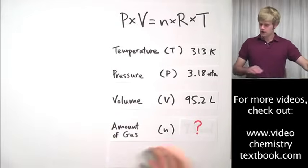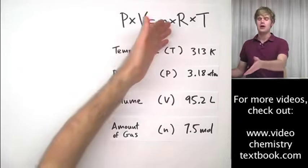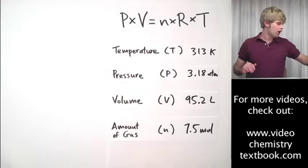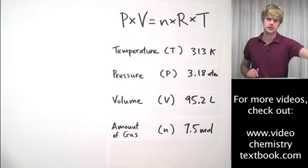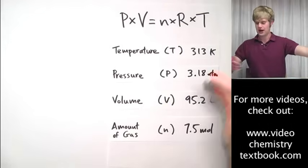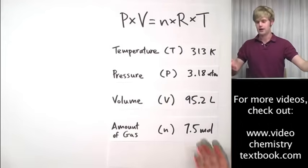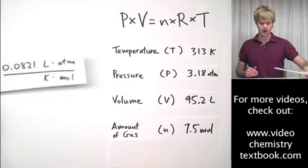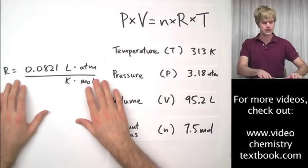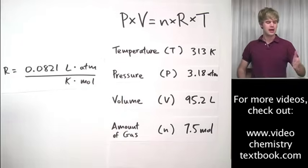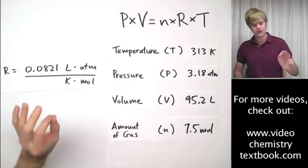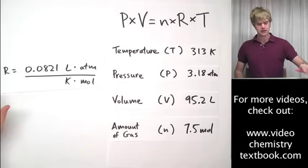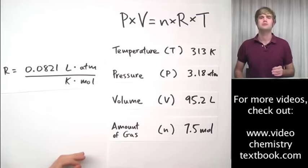So you may be asking yourself, okay, so what's R? R is what we call a constant. It's a number that we know ahead of time that doesn't depend on the variables in our problem. The R that I'm going to be using most of the time for the videos is 0.0821 liters times atm divided by Kelvin times mole.